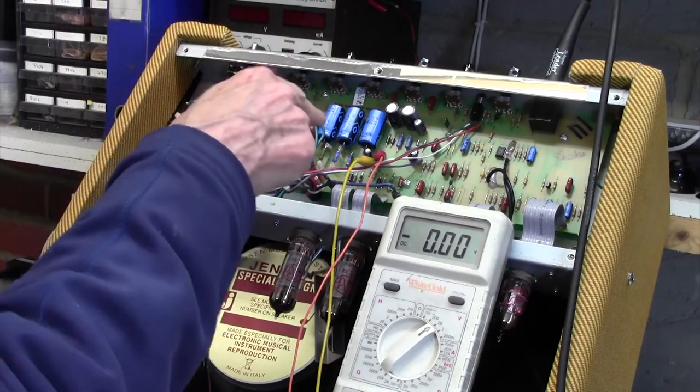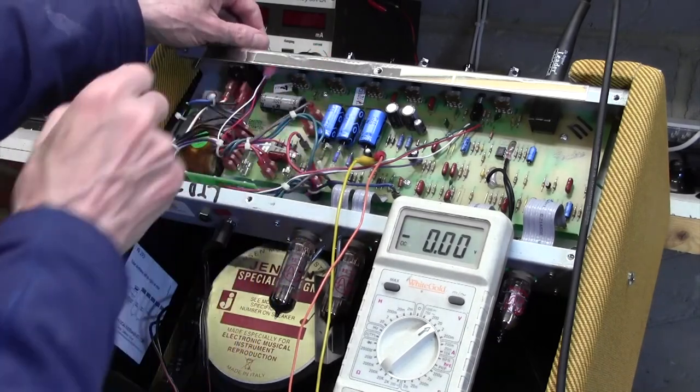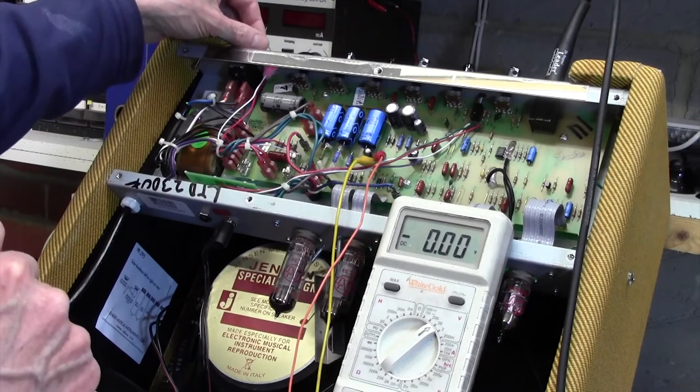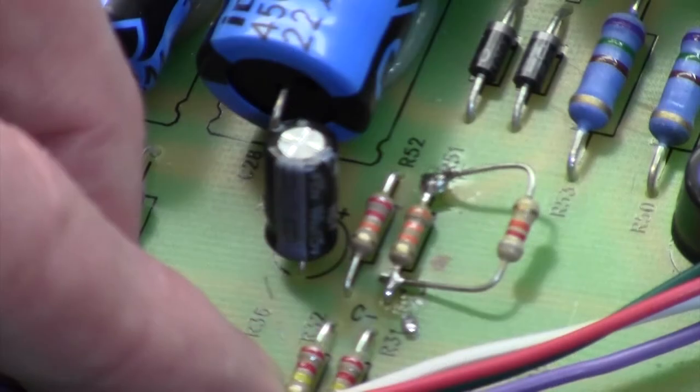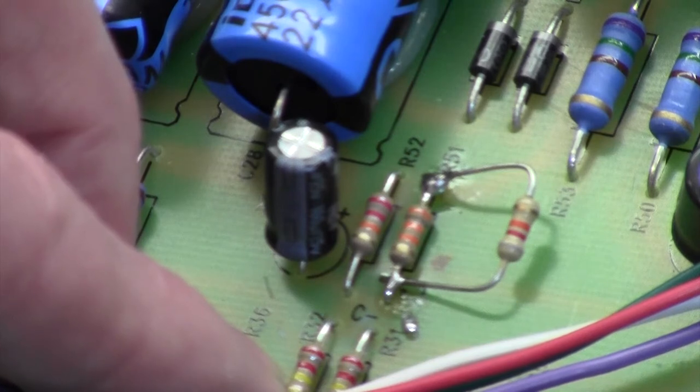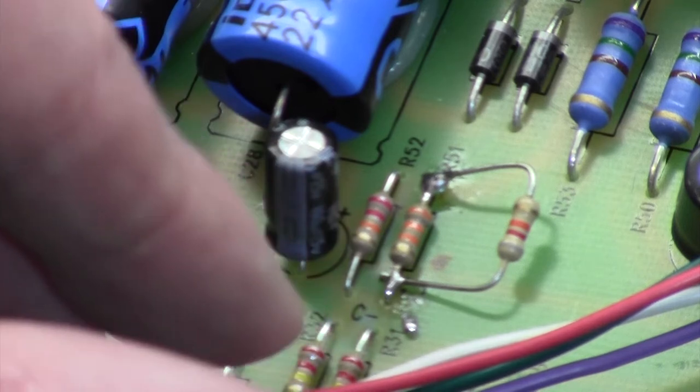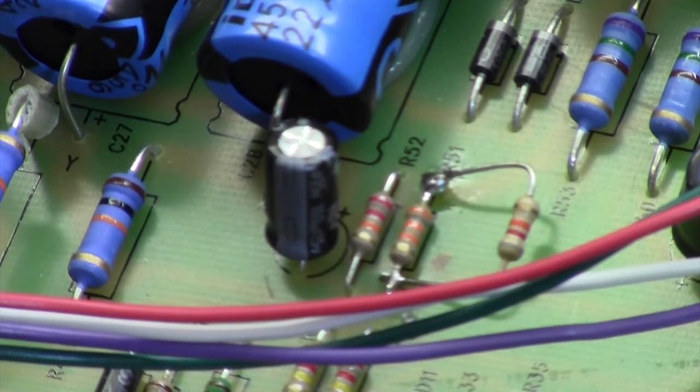What I now need to do is to solder an 82k resistor across that existing 33k resistor. And then we'll just double check that it's all looking good. So I'll do that next. There's just a quick shot of that 82k resistor soldered across the 33k. So now all we need to turn it on and just check that bias is still okay.